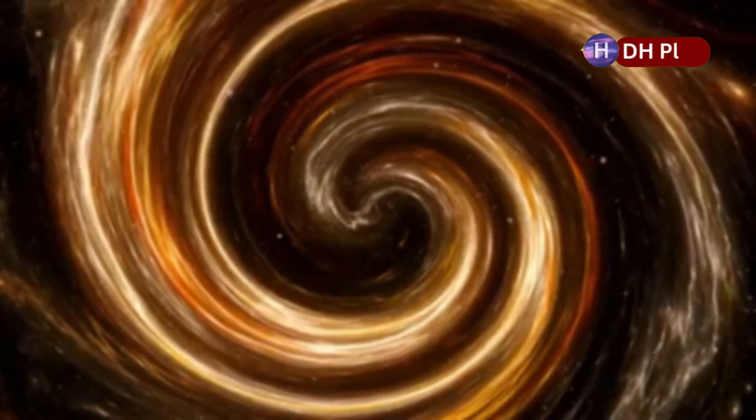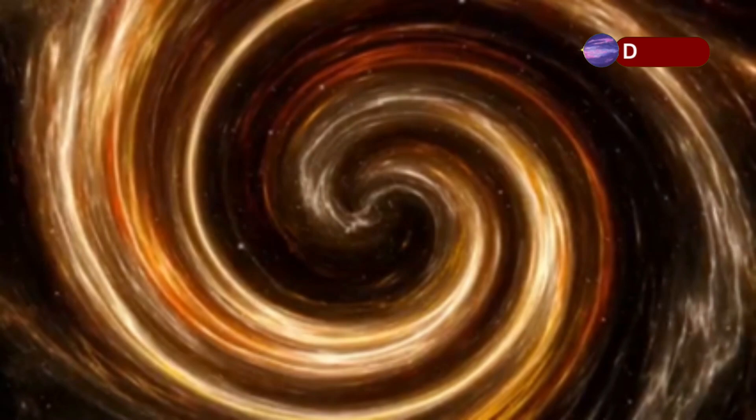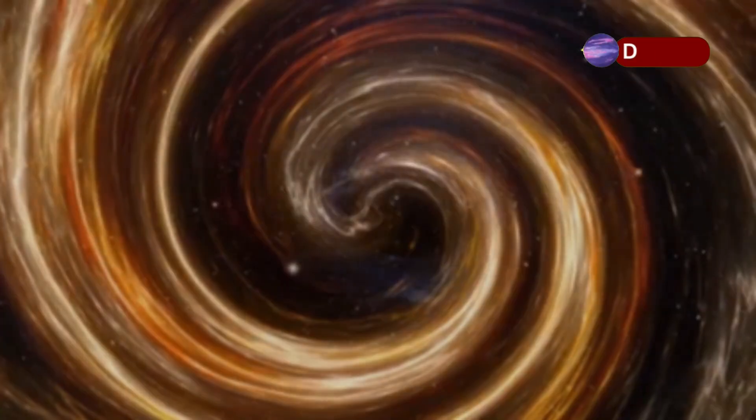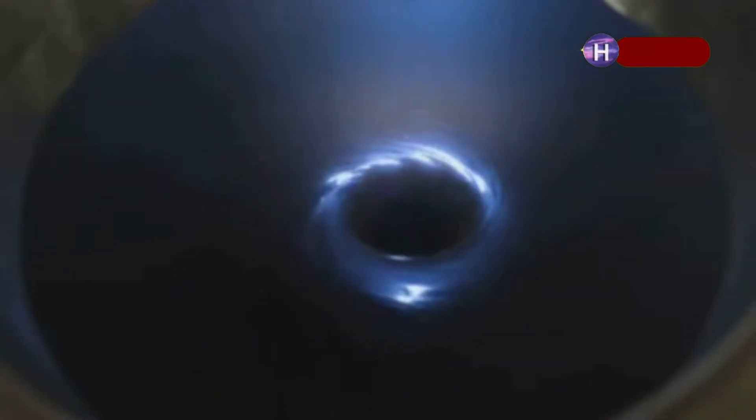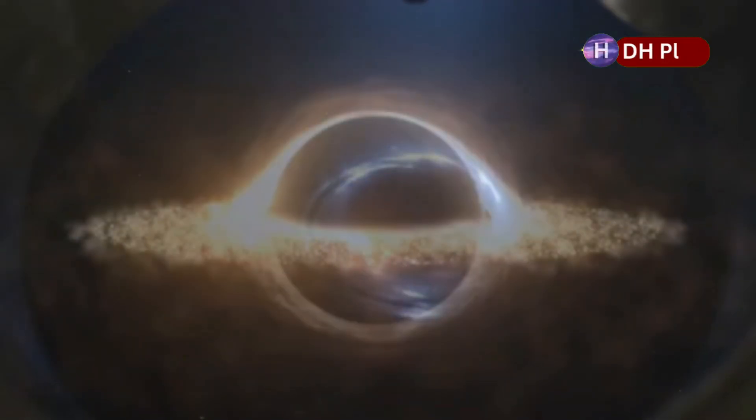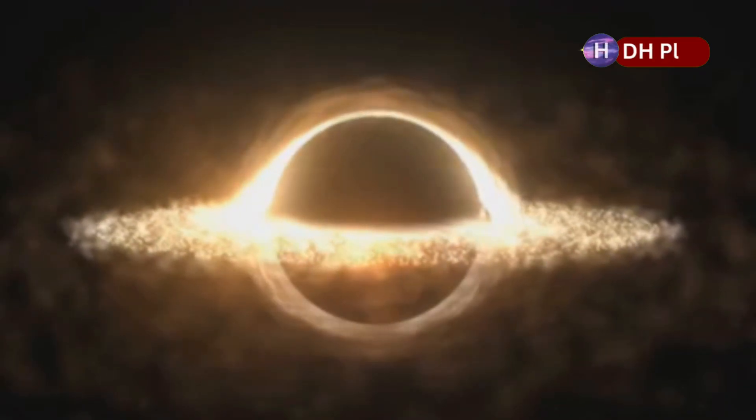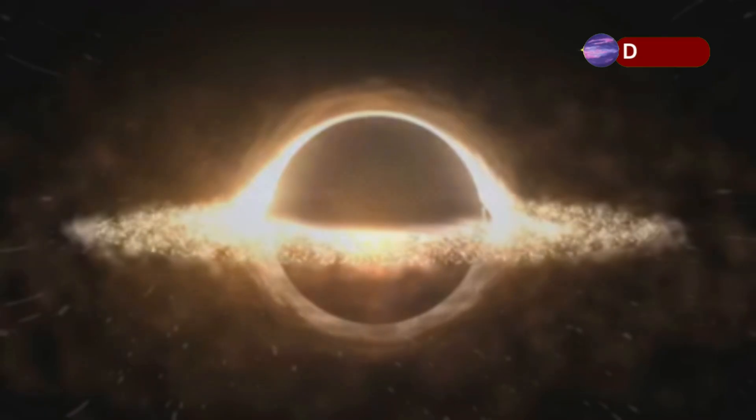There's another layer to this theory: torsion. In extended versions of Einstein's general relativity, like the Einstein-Cartan theory, spacetime can twist. This twist, or torsion, is linked to the spin of elementary particles. At extremely high densities, such as inside a black hole, torsion could become significant, possibly generating a repulsive force that prevents the formation of a singularity altogether.